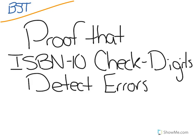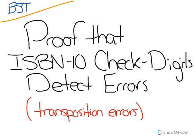Hi, I'm a Bullis student tutor, and in this video I'm going to be talking about a proof that ISBN-10 check digits, which we discussed in our previous video, detect errors, and specifically transposition errors, or when two digits in the ISBN are flipped during transmission.